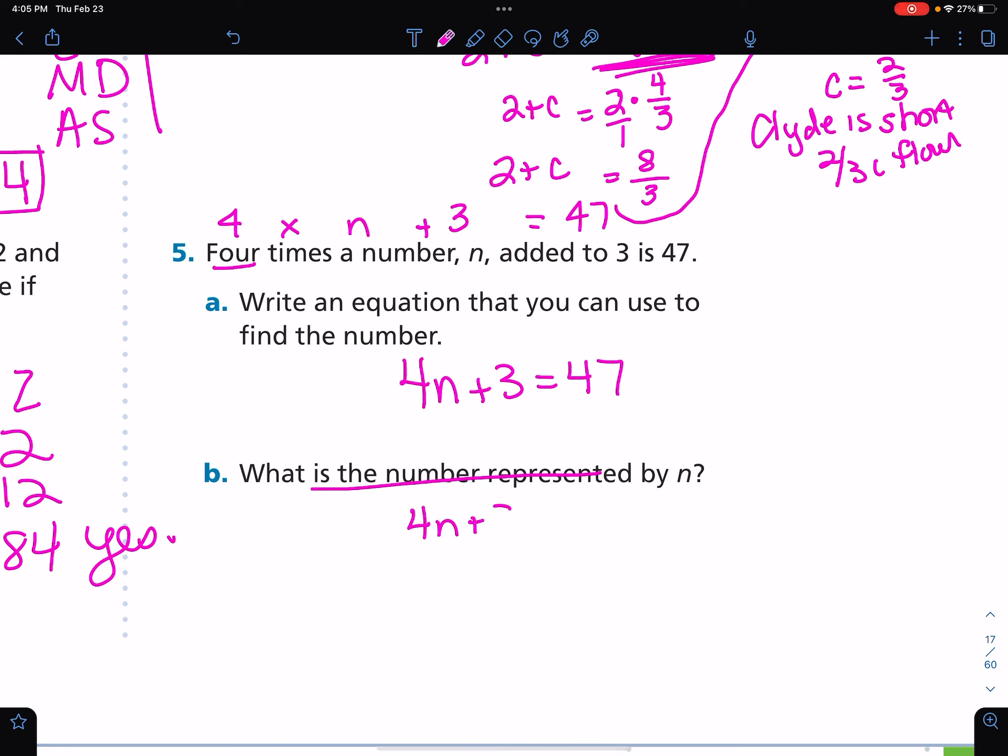So four n plus three equals 47. I'm going to move this three by using the inverse property of addition and subtract three. Left with four n equals 47 minus three, which is 44. Using the inverse property of multiplication, I am dividing by four. n equals 11.